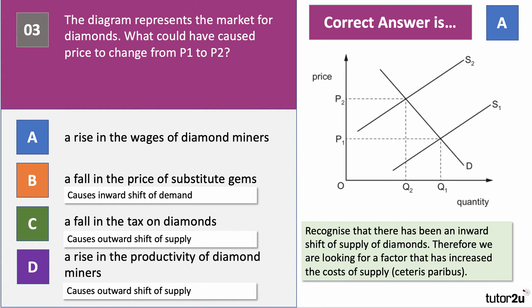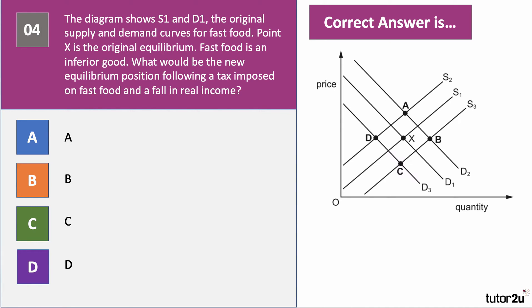Here's question four. The diagram shows S1 and D1 — the original supply and demand curves for fast food. Point X is the original equilibrium. Fast food is an inferior good. What would be the new equilibrium position following a tax imposed on fast food and a fall in real income — income adjusted for inflation? Have a go at question four.